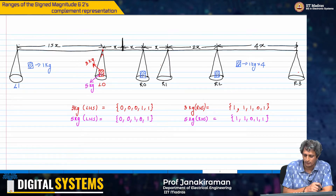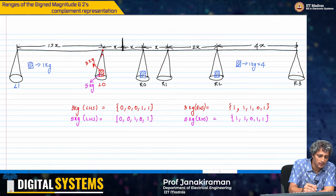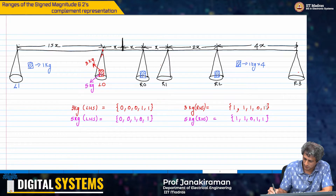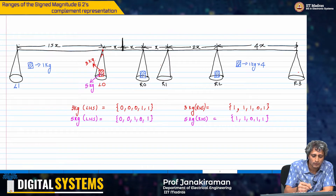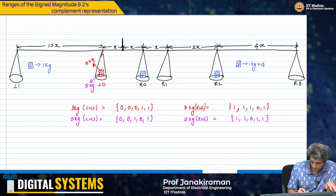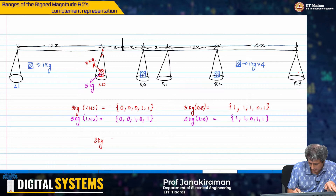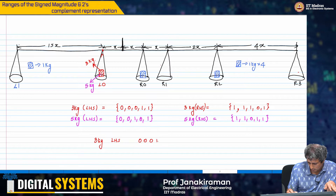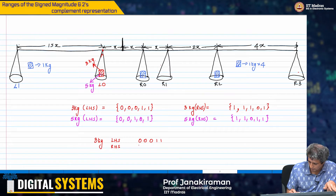What do we observe here? Let us consider the 3 kg case. For 3 kg LHS, we got the representation 0, 1, 1. On the right hand side, we got the representation 1, 1, 1, 0, 1.